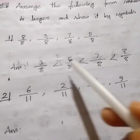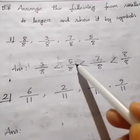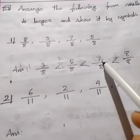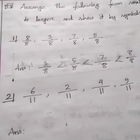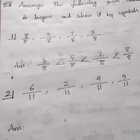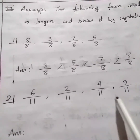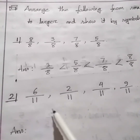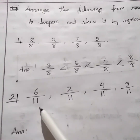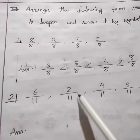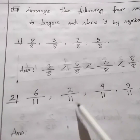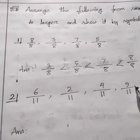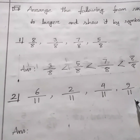This is because 3 is less than 5, is less than 7, is less than 8. Now try this one. Here we have fractions 6 over 11, 2 over 11, 4 over 11, and 9 over 11.